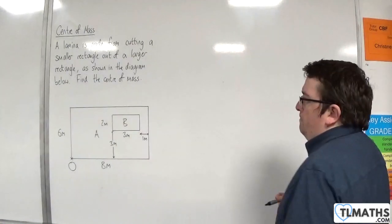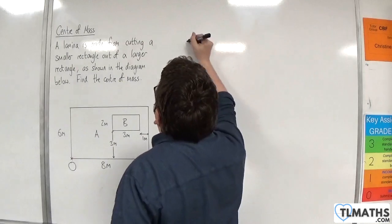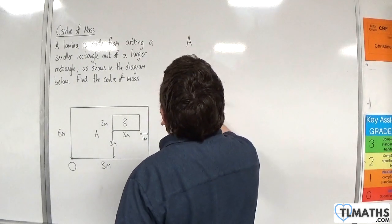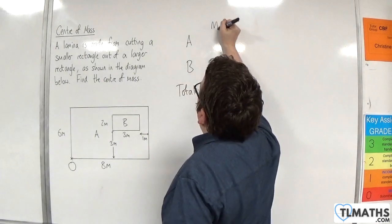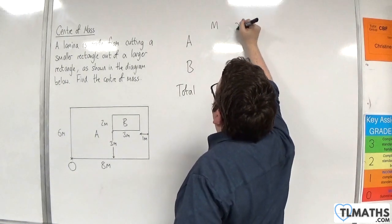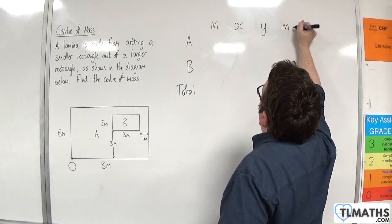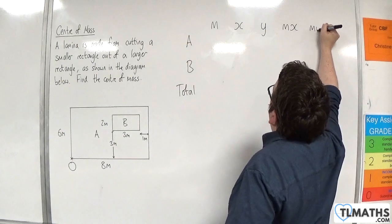OK, so, in my table then, I'm going to have A, B, and the total. I'm going to have the mass M, the centre of mass of A and B, X and Y, and then I'm going to have M times X and M times Y.